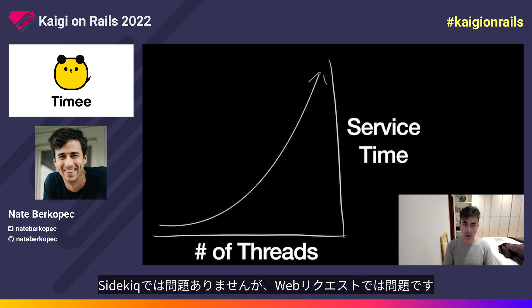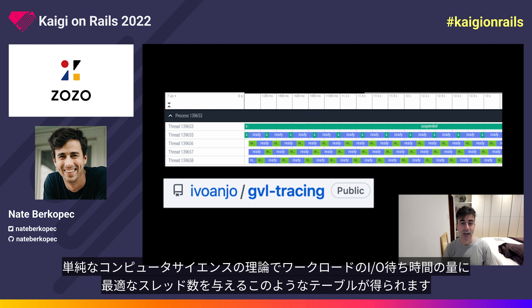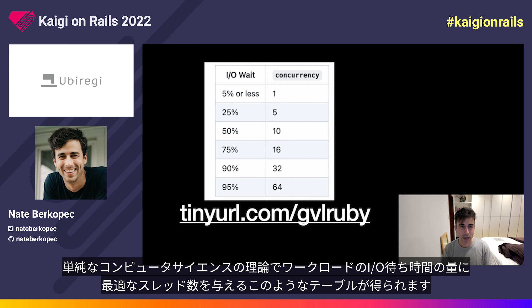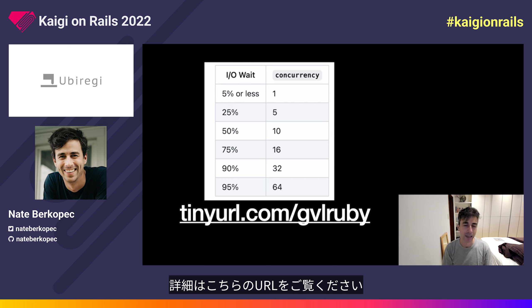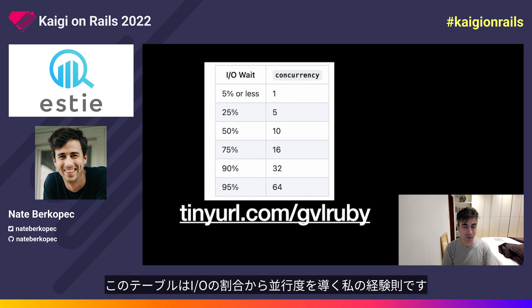If you reduce Puma's thread count to just five, request queue time gets high, but the requests that are serviced get serviced quickly. If this happens for real in production, instead of adding more threads, what we should really do is add more servers behind the load balancer — add more processes. There's actually some computer science theory you can use to figure out the best thread count for the amount of IO wait time in your workload. I've written more about this at a URL in the slides. This is my rule-of-thumb table for what your concurrency or thread setting should be on Puma or Sidekiq given a percentage of time waiting on IO.